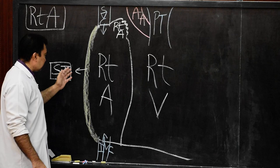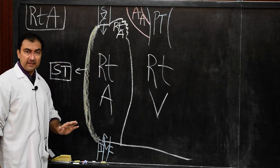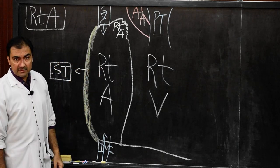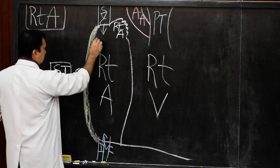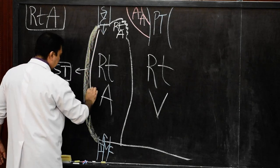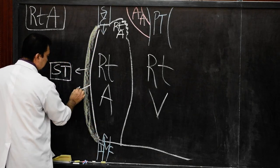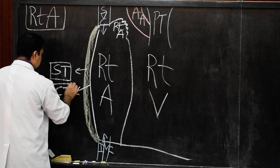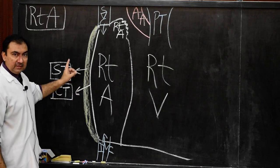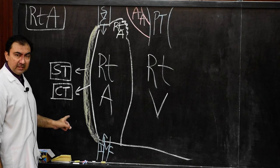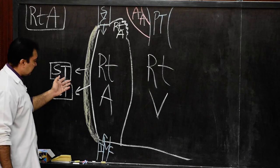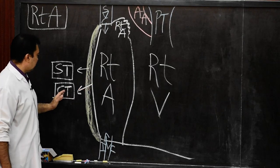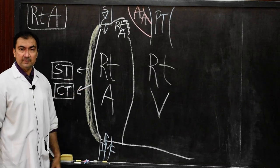This sulcus terminalis, when we open the right atrium, will correspond on the inside with the crista terminalis. This is very important: sulcus terminalis present on the external aspect corresponds on the interior of the right atrium with the crista terminalis.